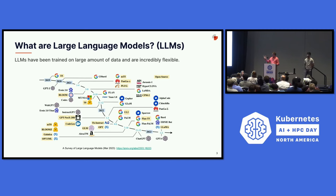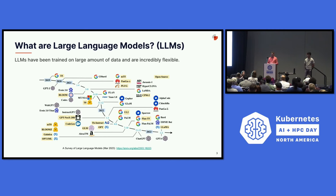Since those large language models appeared, we've had a lot of open source investment, particularly models like Meta's Llama and Llama 2, which are available in smaller sizes of 7, 13, and 70 billion parameters but still very powerful. And when you fine-tune these models, you can get amazing results.